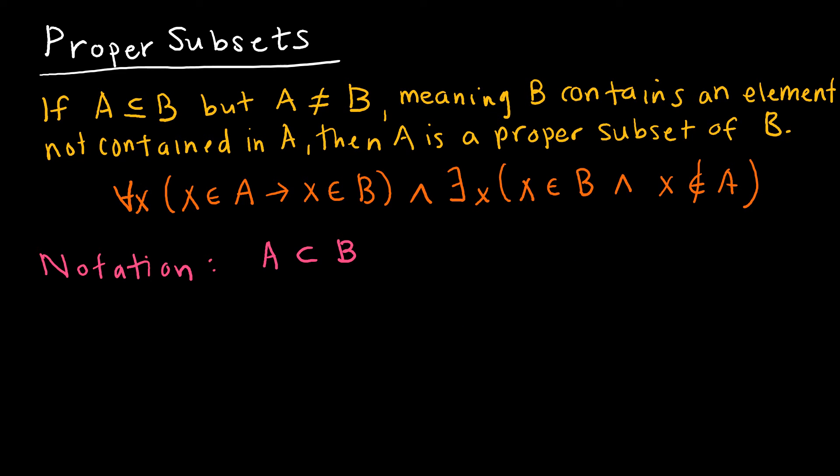So now that we understand a subset, it's important to understand the difference between a subset and a proper subset. So with our subsets, we said A was a subset of B, and we used this line to denote that they could in fact be the exact same set. So here we're talking about a proper subset, and note how my notation is just going to change a little bit. A proper subset says that A is a subset of B, but that they are not equal to one another.